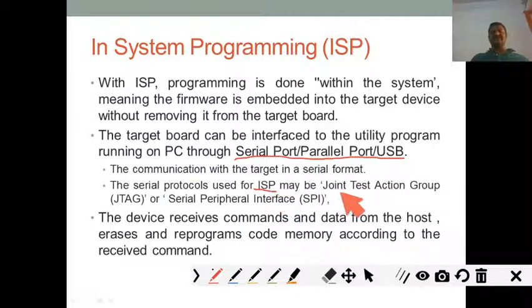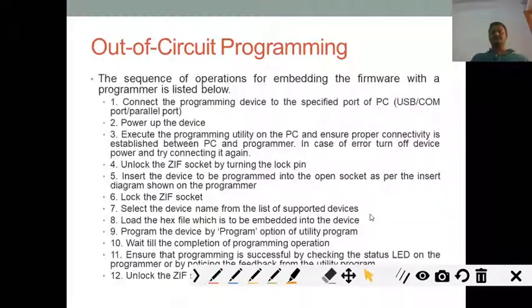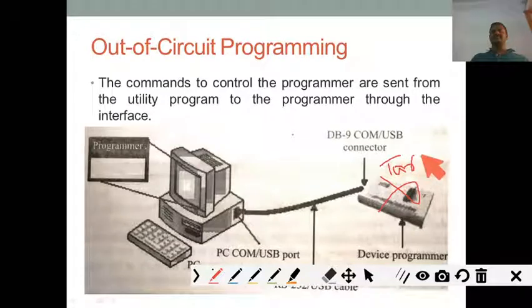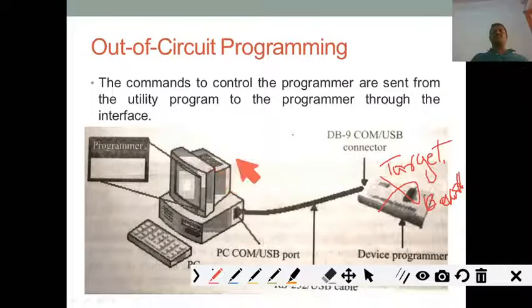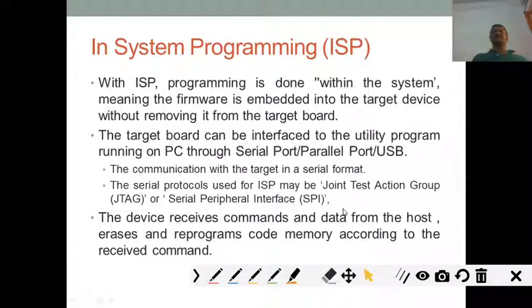More popularly, ISP uses JTAG — Joint Test Action Group — or serial peripheral interfaces. In ISP, there is no need for a device programmer. You directly copy the firmware to the target board itself, so no additional device programmer is needed. This is the main advantage of ISP over out-of-circuit programming, and it is achieved using two serial protocols: JTAG and SPI.